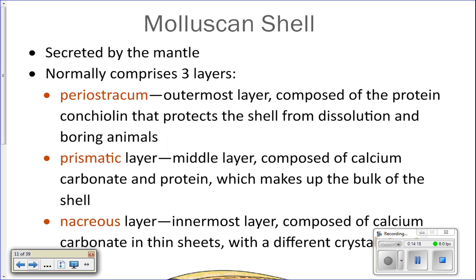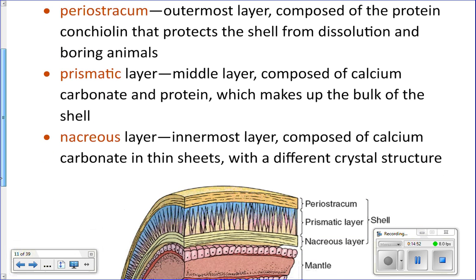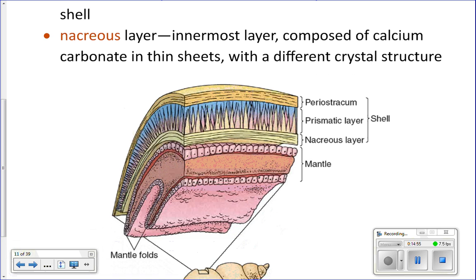The shell has three layers. The periostracum is the outermost layer — it has lots of protein and helps keep the shell from dissolving, since calcium carbonate would eventually dissolve in water. The prismatic layer is the middle layer and the bulk of the shell, made of calcium carbonate and protein. The innermost layer is the nacre layer, also made of calcium carbonate, but laid down in a different crystal structure than the prismatic layer — and because of that different crystal structure, it gives you mother of pearl.